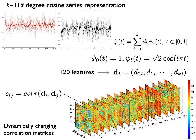Since fMRI data is very noisy, it is necessary to do some filtering to improve performance. In general, performance may increase with spatial or temporal denoising. The way we did temporal denoising at the region level is to use the Fourier expansion — we basically did the Fourier expansion of the signal and used the coefficients of the expansion as features. We then correlate this across different brain regions to obtain dynamically changing correlation matrices.